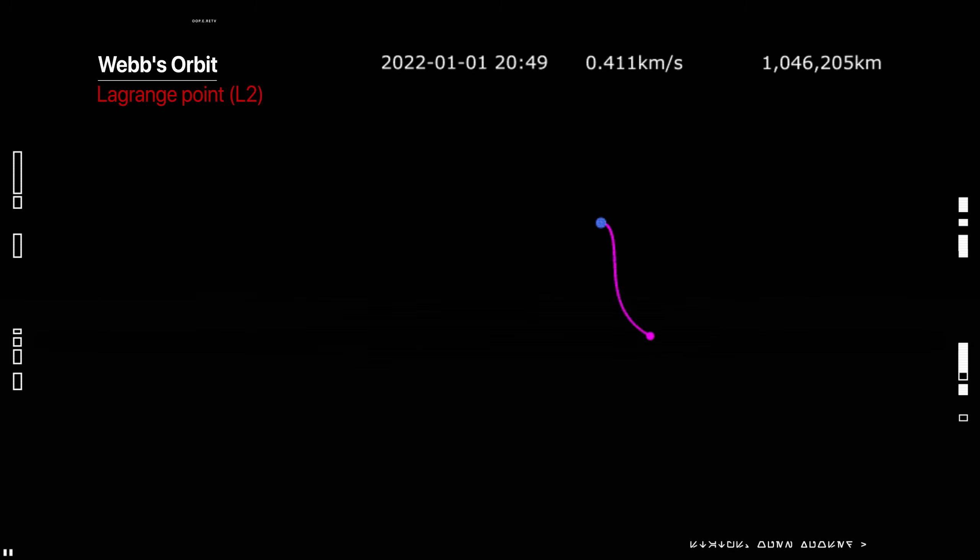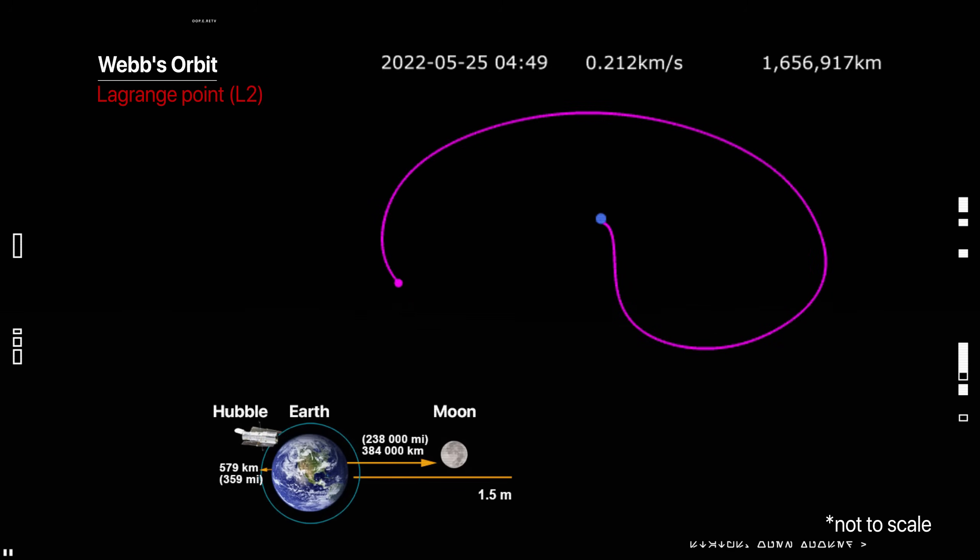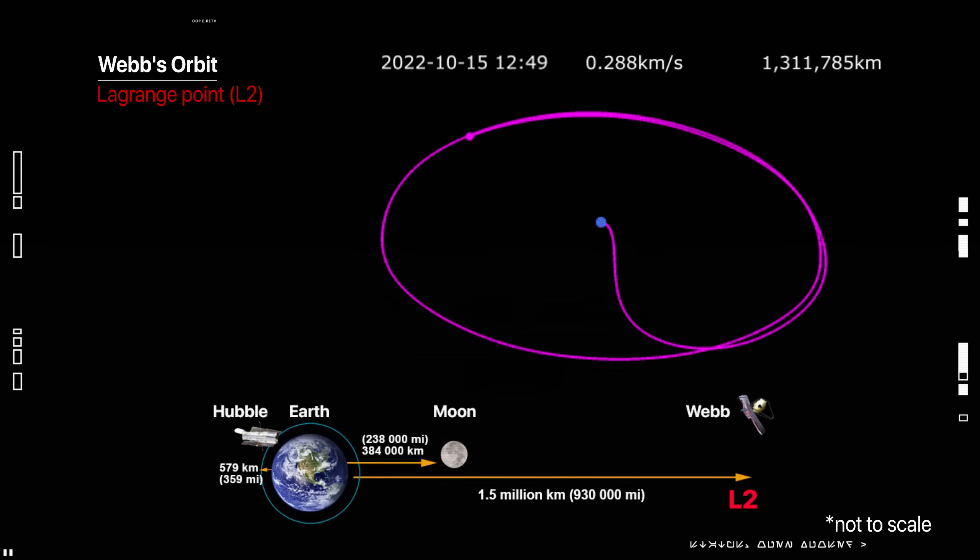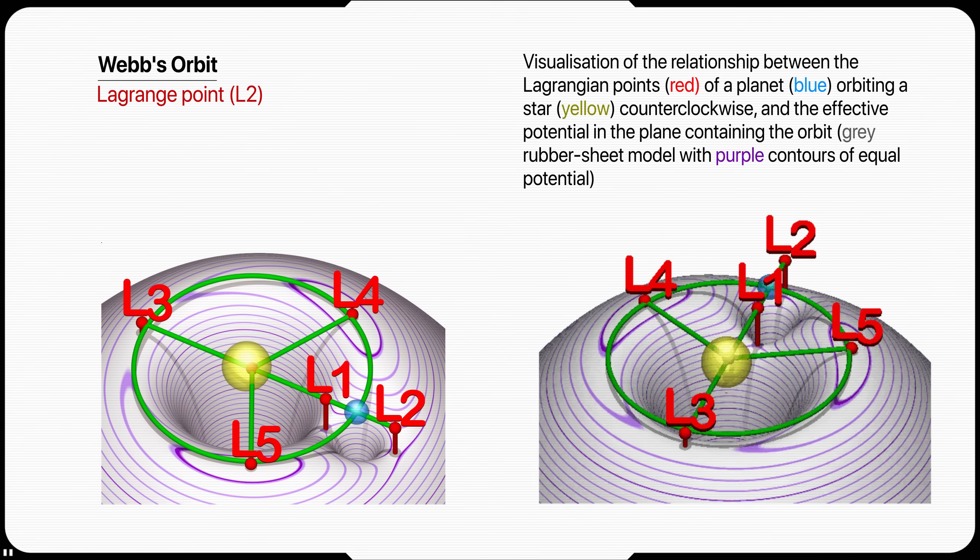The telescope will be placed in an orbit about the Sun-Earth-L2 Lagrange point, located about 1.5 million kilometers from Earth, which is four times the distance between the Earth and the Moon, and it takes 30 days for the telescope to reach L2.